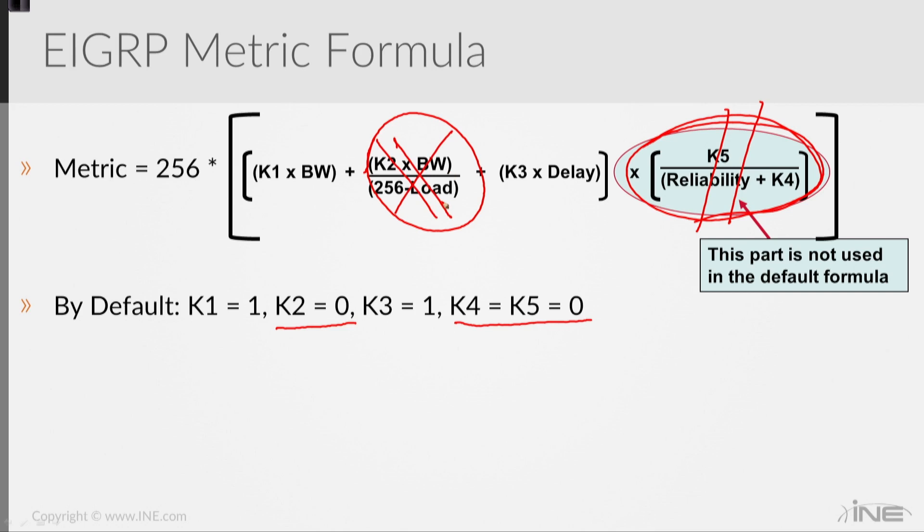So because of that, we end up with the metric being 256 times whatever the bandwidth is plus the delay. So bandwidth plus delay times 256 is what EIGRP uses as its distance. Now it's a little bit more complicated than that because, for example, bandwidth is a scaled number. In other words, I'll just do this down here: if my bandwidth